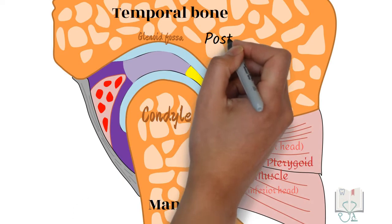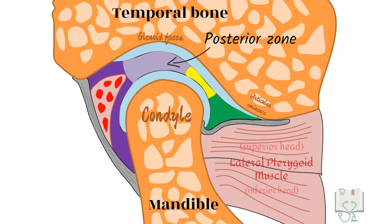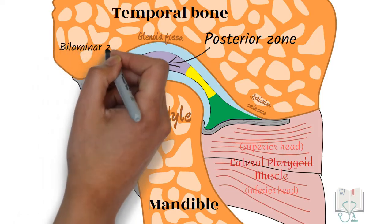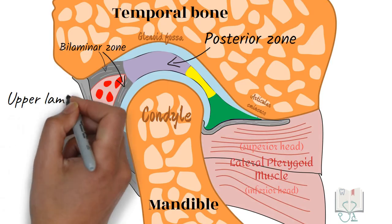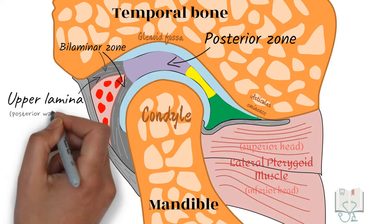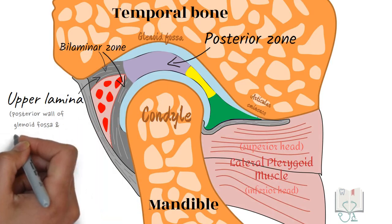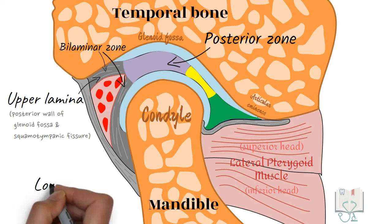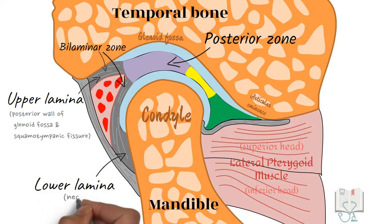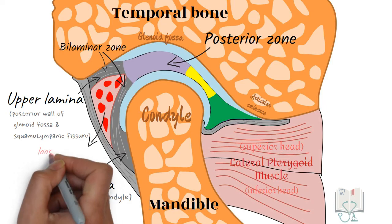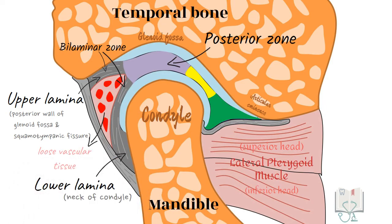The thick posterior zone occupies the gap between the condyle and the floor of the glenoid fossa. It connects posteriorly by a bilaminar tissue: the upper lamina inserts into the posterior wall of the glenoid fossa and squamotympanic fissure, and the lower lamina joins the neck of the condyle. Between the two lamellae, a space is created that is filled with loose, highly vascular connective tissue.